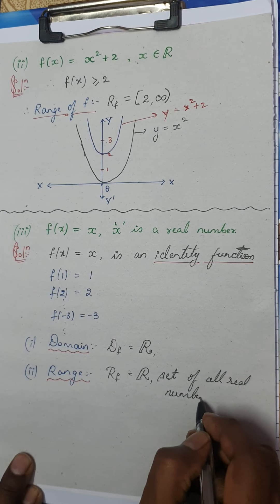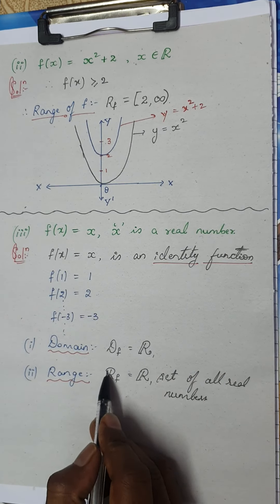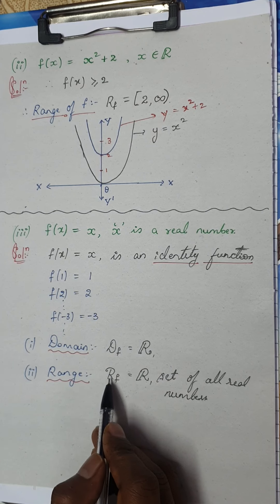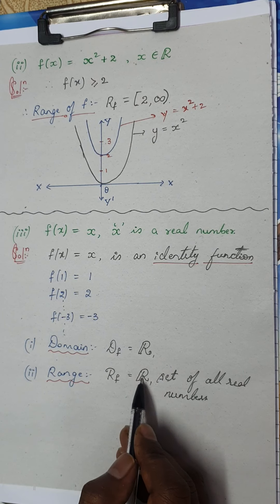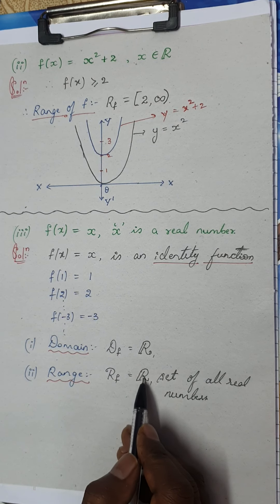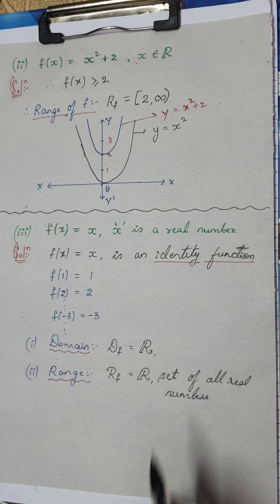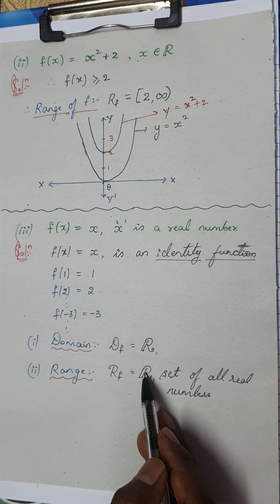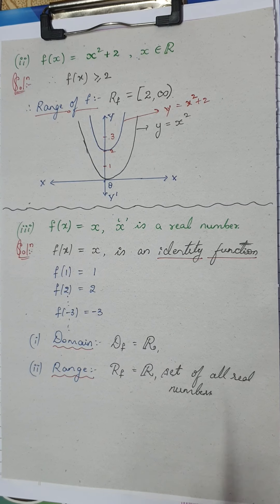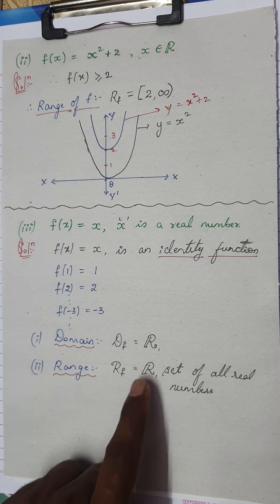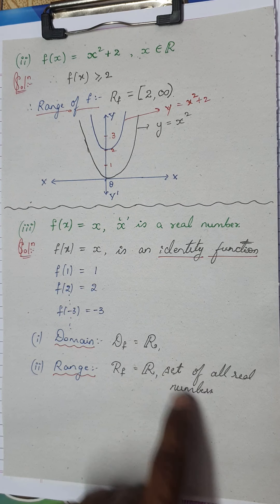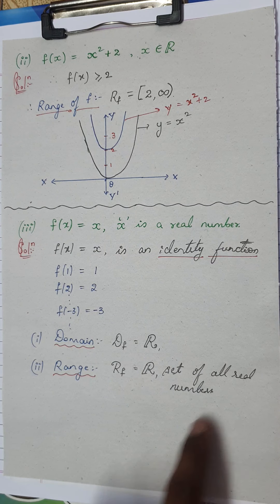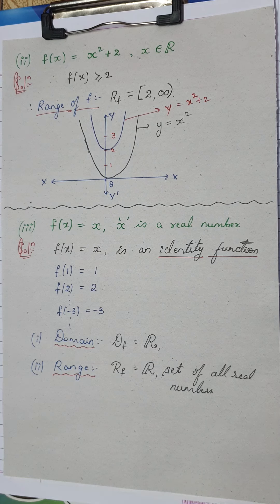Note that I use double-line notation ℝ to indicate the set of real numbers, to differentiate it from the range symbol r. If you have any confusion, just write 'set of all real numbers.' This concludes the solution for this question.